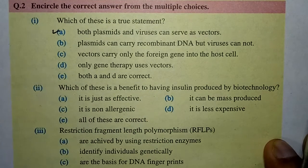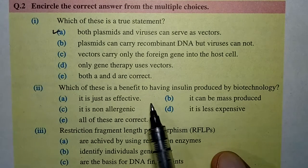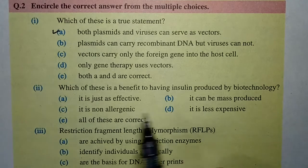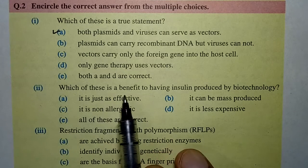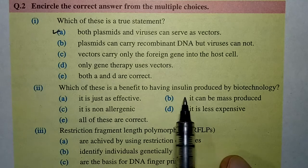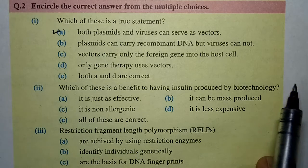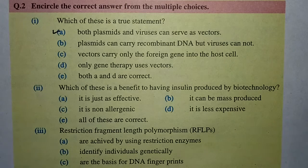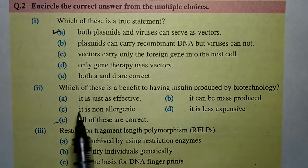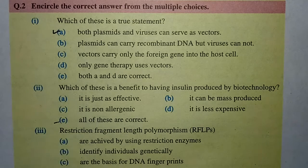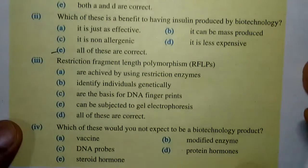The second MCQ: 'Which of these is a benefit to having insulin produced by biotechnology?' The answer is the last option — all of these — because biotechnology-produced insulin is just as effective, it can be mass produced, it is non-allergic, and it is less expensive. All these options are correct, so 'all of these' is the right answer.